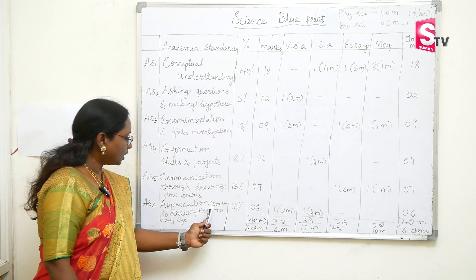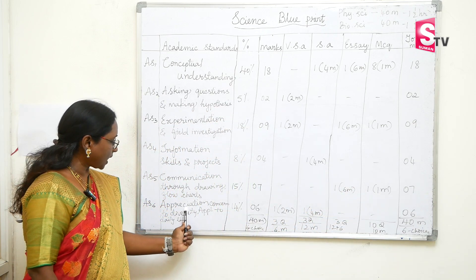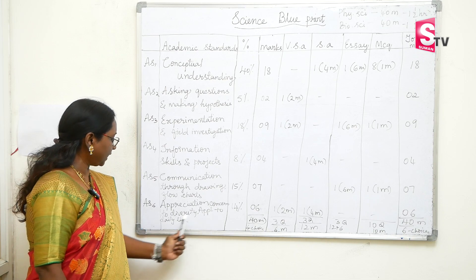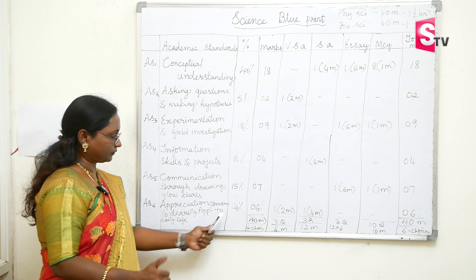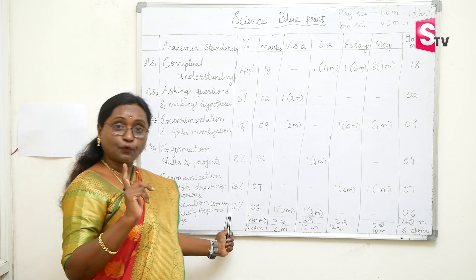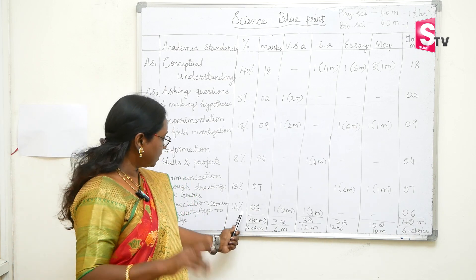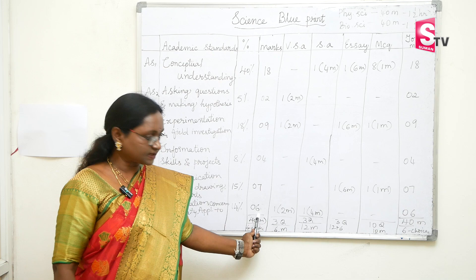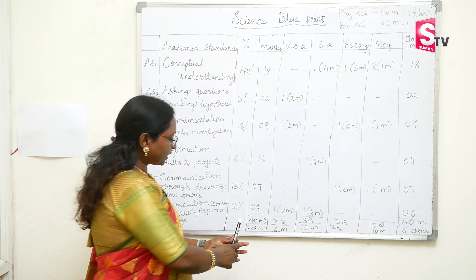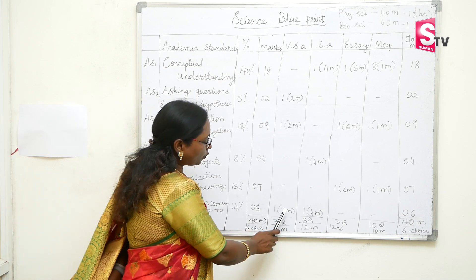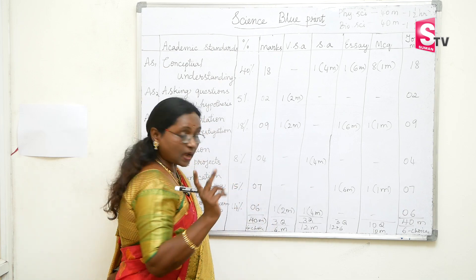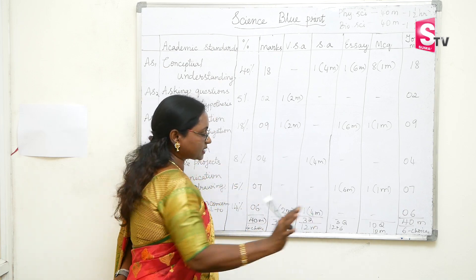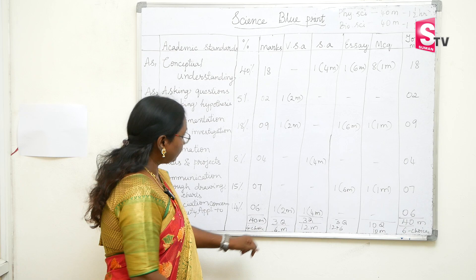The sixth and last standard — appreciation, concern for biodiversity, and application to daily life — covers 14% of the paper with a total of 6 marks: one 2-mark question and one 4-mark question.